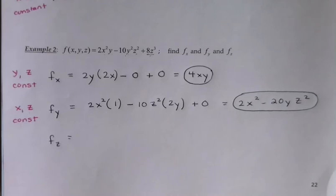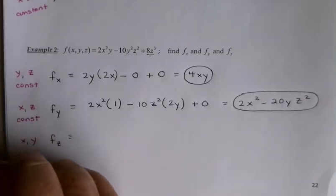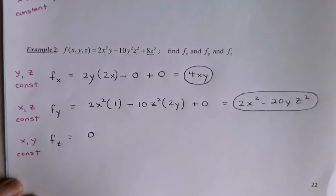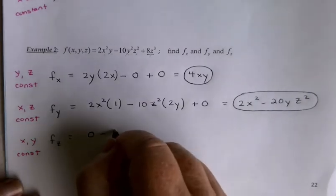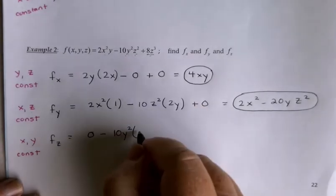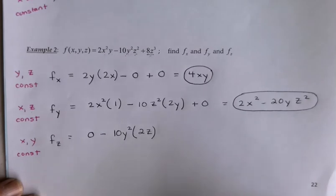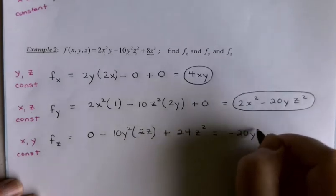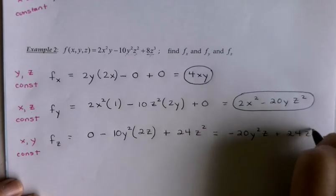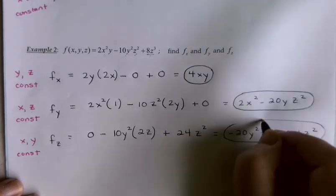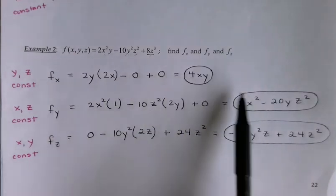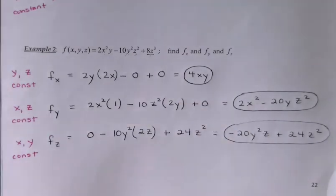For f sub z, x and y are treated as constants. The whole first term is constant, so its derivative is 0. Minus: constant multiplier 10y squared times the derivative of z squared, which is 2z. Plus 24z squared from the last term, giving negative 20y squared z plus 24z squared. As you get more comfortable, you'll probably stop writing intermediate steps and be able to write down answers for these simple polynomial-type functions directly.